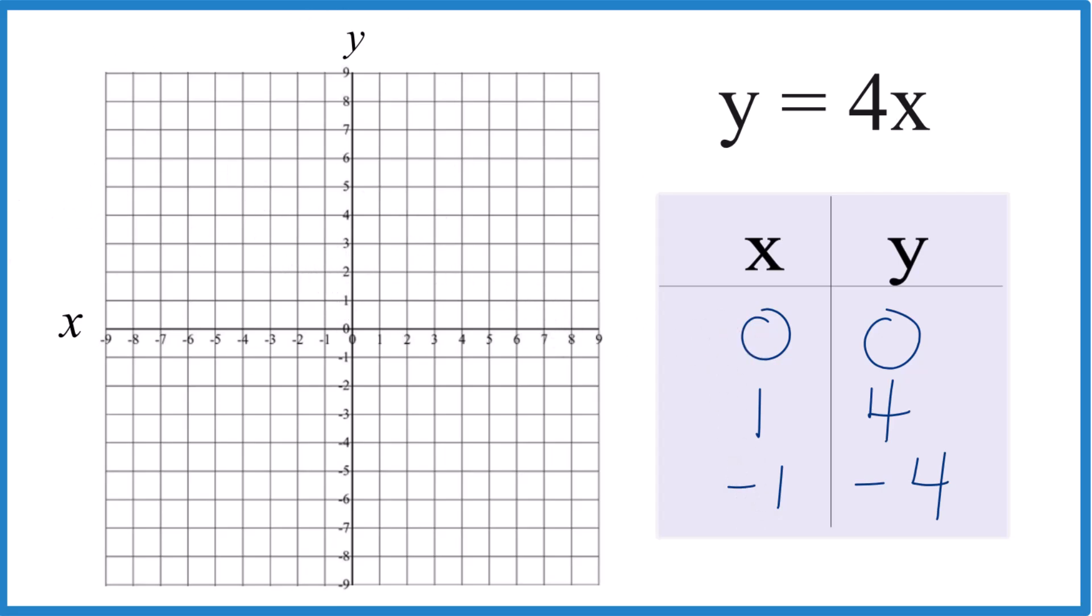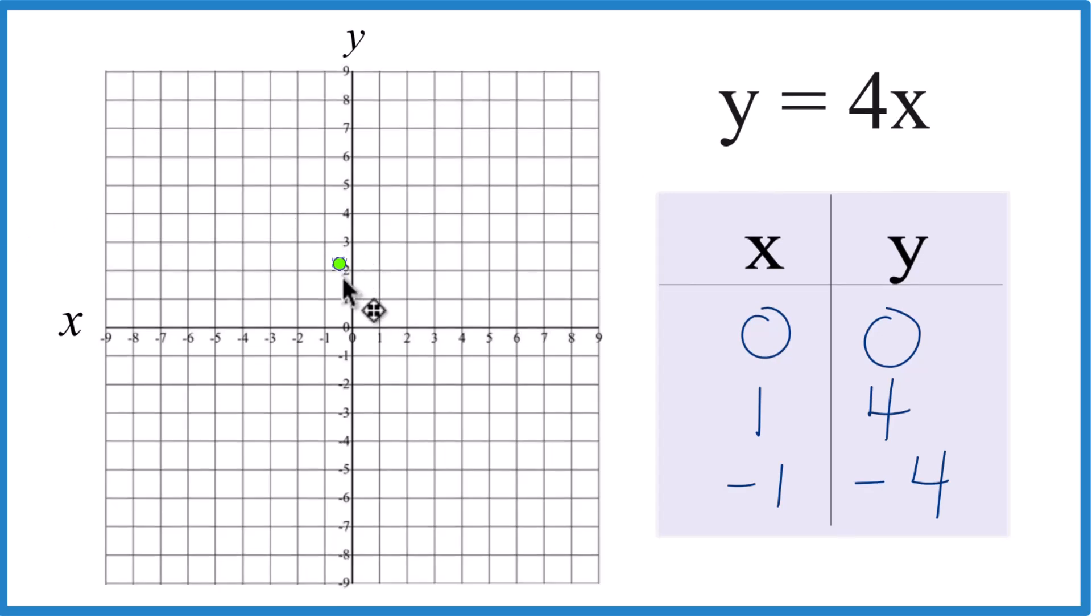Okay, 0, 0. So if we put 0, 0, that's right here. If x is 1 and y is 4, we're right there. And you could just graph with two points.